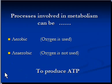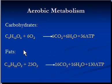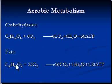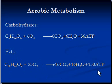The processes involved in metabolism can be aerobic, meaning oxygen is used to produce adenosine triphosphate, or anaerobic, meaning oxygen is not used to produce adenosine triphosphate. For example, one molecule of carbohydrate uses six molecules of oxygen to produce 36 adenosine triphosphate molecules. One molecule of fat uses 23 molecules of oxygen to produce 130 adenosine triphosphate molecules. Notice that carbon dioxide and water are by-products, and that one fat molecule produces more adenosine triphosphate compared to one carbohydrate molecule, which produces 36.